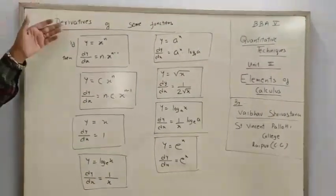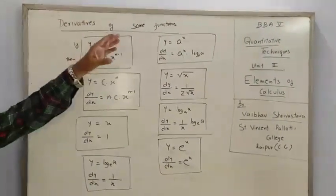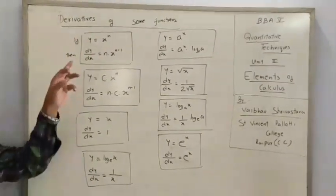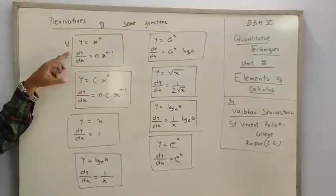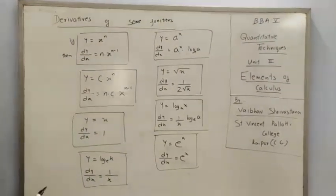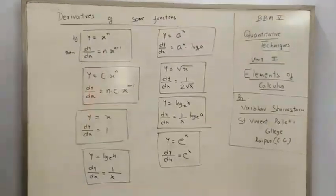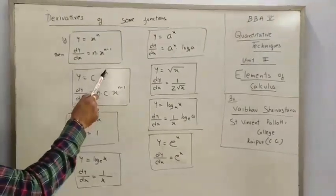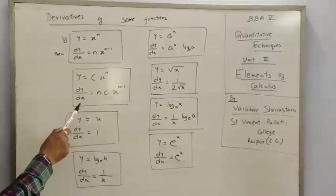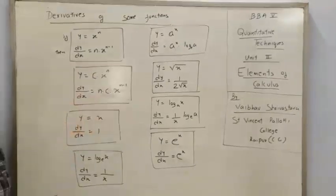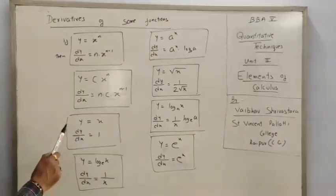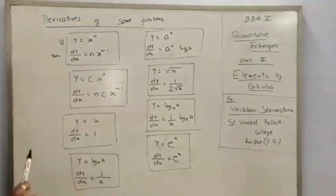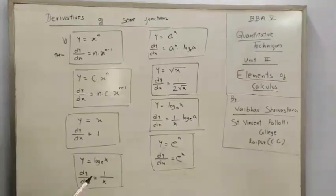There are some functions whose derivatives are listed here. If Y = X^N, then dy/dx = N·X^(N-1). In the same way, if it is multiplied by C — Y = C·X^N — then dy/dx = C·N·X^(N-1). If Y = X, then dy/dx = 1. But if Y = log X (base e), then dy/dx = 1/X.